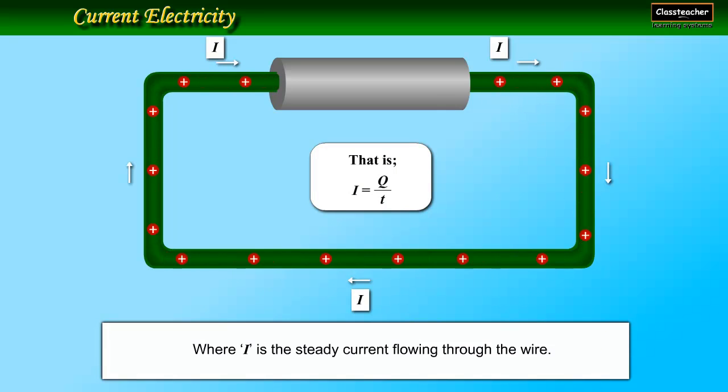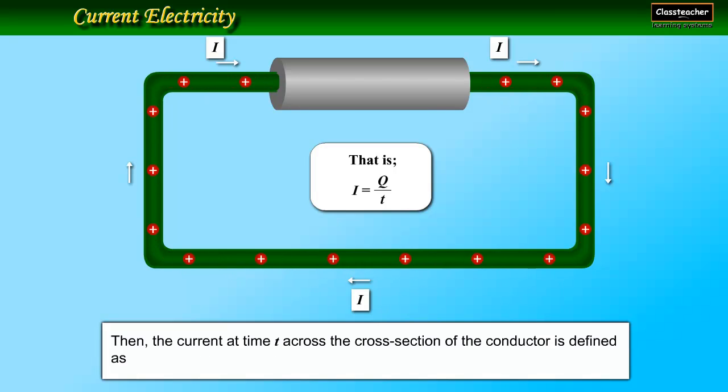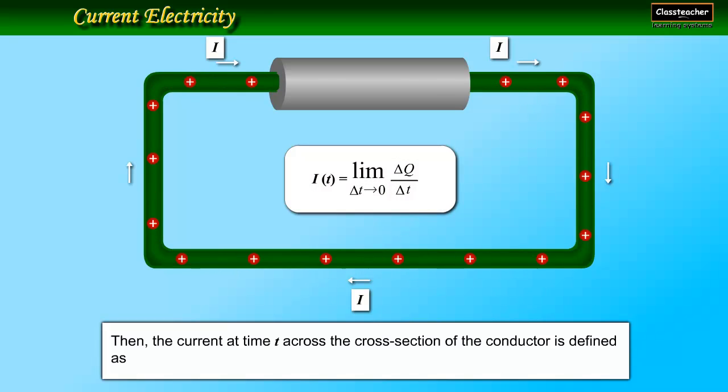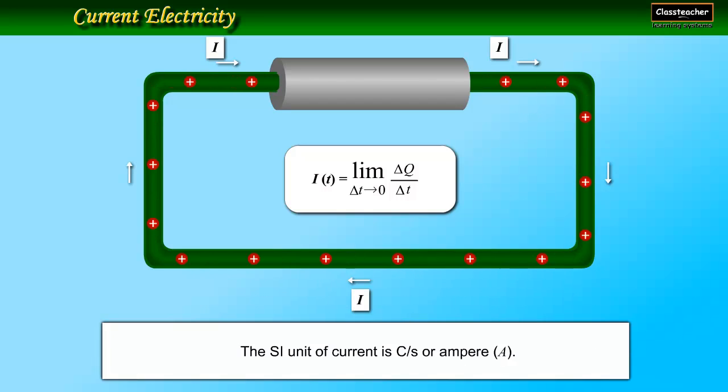Currents are not always steady, and hence more generally, we define current by taking delta Q as the net charge flowing across a cross-section of a conductor during the time interval delta T. Then the current at time T is defined as I at time T equals the limit as delta T tends to zero of delta Q upon delta T. The SI unit of current is ampere, A.